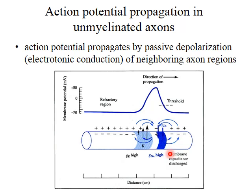There are several questions we can ask about propagation of action potentials in unmyelinated axons. We know that if this region of the axon is depolarized, not only will this depolarization spread passively down the axon in the forward direction, but the depolarization will be equally well propagated passively backwards in the opposite direction. So the question is: why doesn't the action potential propagate in both directions at each point along the axon?